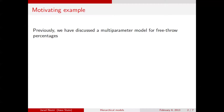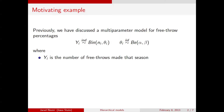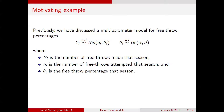As a refresher, our model here is that the data — the number of free throws made in a season — are binomial, with N_i attempts for each season, and theta_i being the true free throw percentage for that season. We assumed that the data were independent across seasons, and each season has its own individual free throw percentage. We placed a prior on these free throw percentages that was a Beta(alpha, beta) prior — in the previous analysis, I believe this was a Beta(1,1) prior.